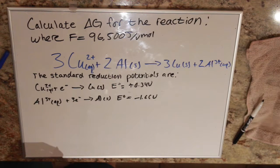Okay, so this question is asking us to calculate the delta G for the reaction: 3 copper 2+ plus 2 aluminum gives us 3 copper solid plus 2 aluminum 3+.